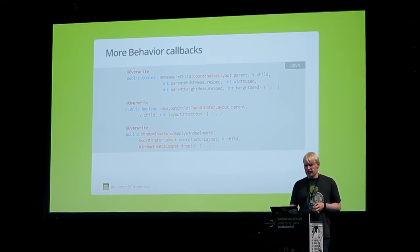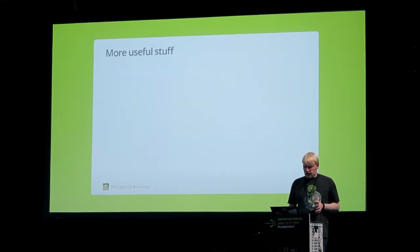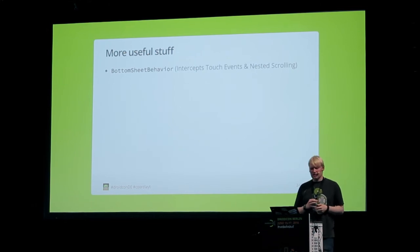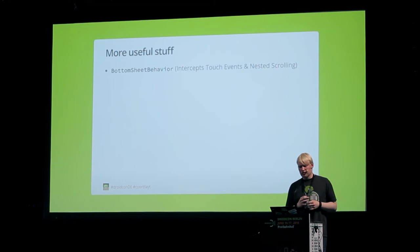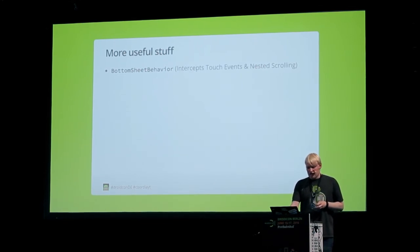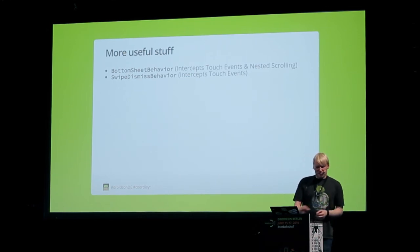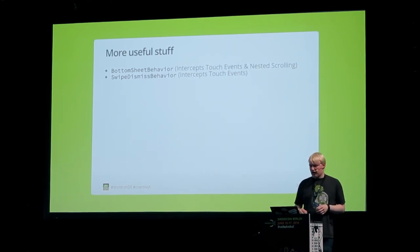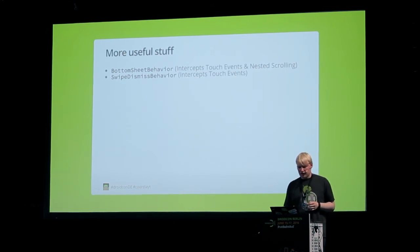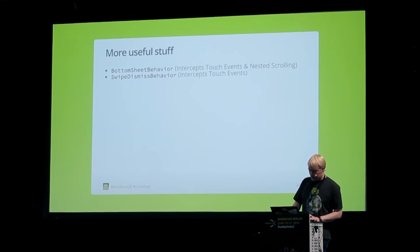Other useful behaviors in the design library include the BottomSheetBehavior, which intercepts touch events and nested scrolling, making any view it's applied to behave like a bottom sheet inside CoordinatorLayout — it's also quite complex. Another is the SwipeDismissBehavior, which implements the swipe-to-dismiss pattern and is used internally by the SnackbarLayout. So when the Snackbar is visible, you can touch and swipe it away — that's implemented by this behavior, which intercepts touch events.